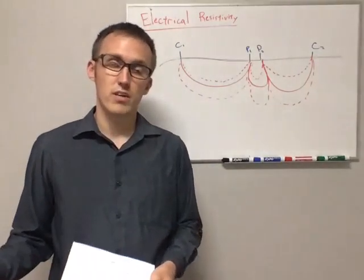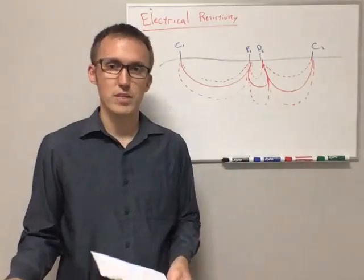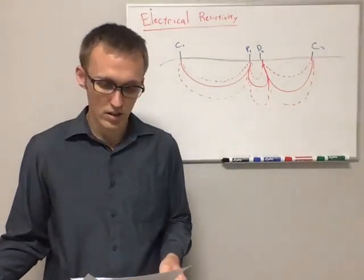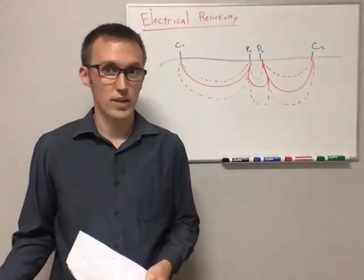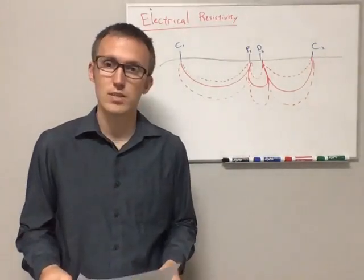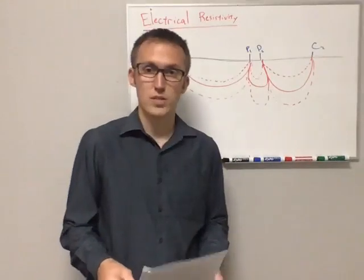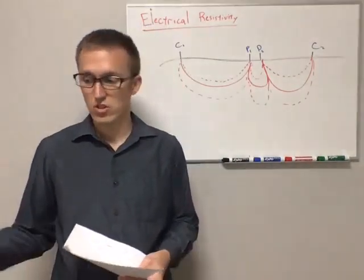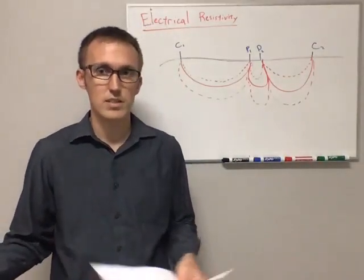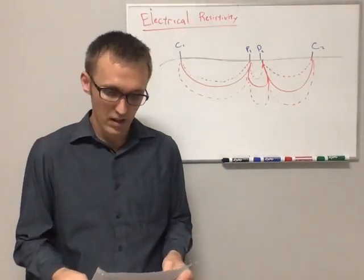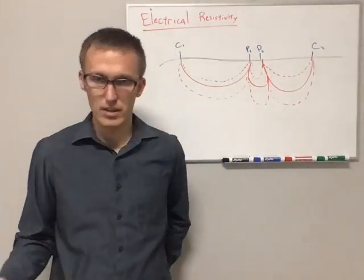So in terms of what we'll be covering, we have some basic theory that's gone over in the book, as well as some information on different types of arrays and how they're designed and deployed in the field. We'll be talking about some interpretation methods, whether that's just looking at the data and seeing the anomalies or actually doing an inversion, as well as a few case studies presented in the book.